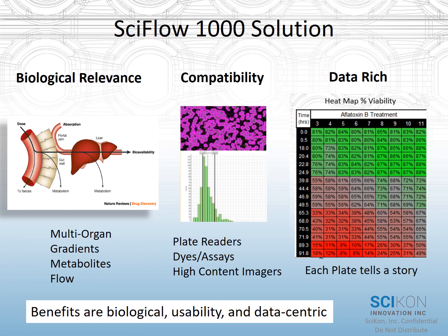Additionally, there are gradients. Because it is a fluidic system, we see gradients of compound, gradients of metabolites, and gradients of cellular responses. And finally, there is flow. Biological systems are not stagnant, and SciFlow recapitulates a lot of that flow that's seen in in vivo systems.